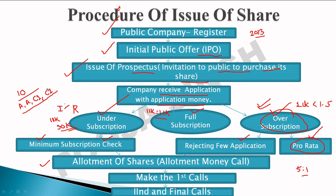So there are 4 stages: application stage, allotment stage, first call, and second and final call. For example, on a 10-rupee share, the company may call 2 rupees on application, 2 rupees on allotment, 3 rupees on first call, and 3 rupees on second and final call — totalling 10 rupees. This is the way the company issues shares.